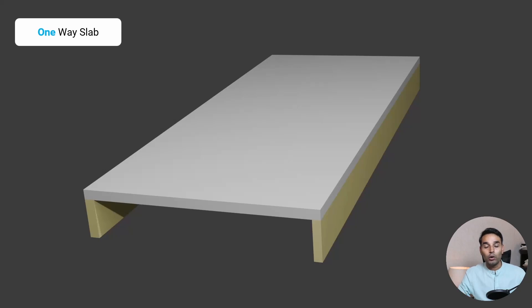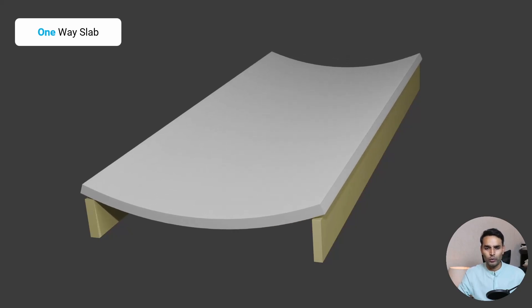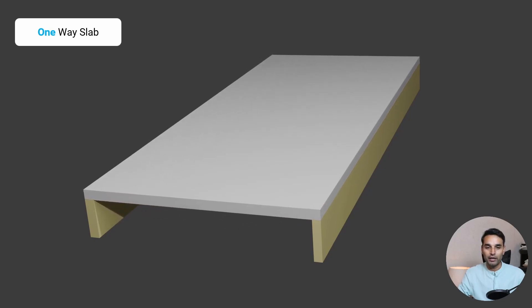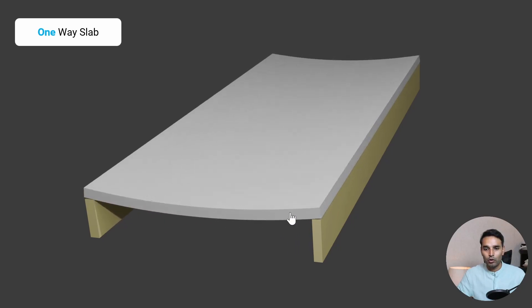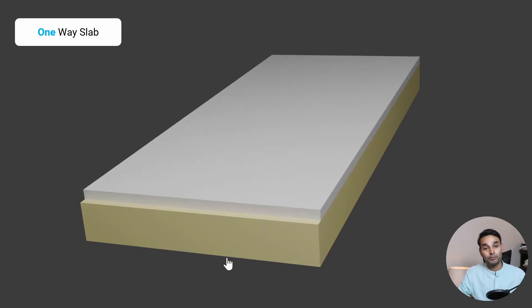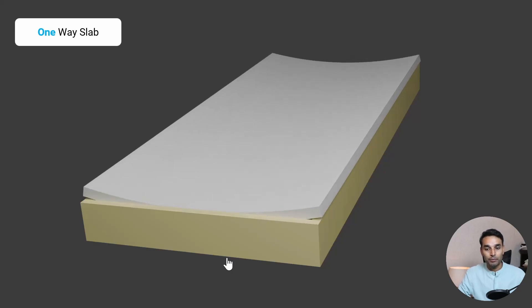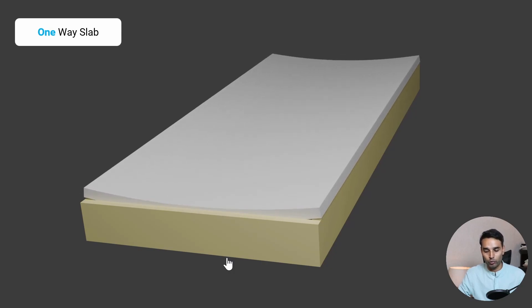Let's start by understanding how a one-way slab behaves. This short animation shows how a one-way slab supported on either two walls or two beams is going to behave. As you can see, there is going to be a primary deflection along just one axis. Even if the same slab is supported on four sides, if it's a one-way slab, the deflection will be in one direction only.